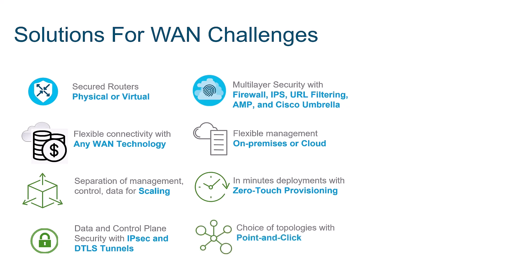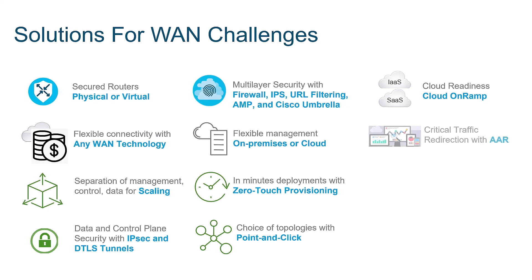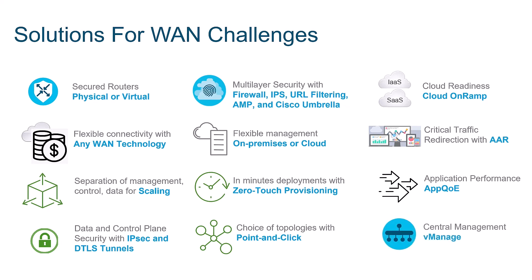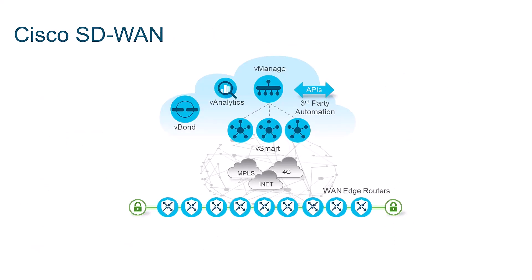Any kind of topology is supported. You can get connected to the cloud at any moment using a feature called Cloud on-Ramp. There's also application-aware routing to traffic-steer the most important applications to the best-performing circuit, and application Quality of Service to treat your applications in the best possible way — all managed from a central controller called vManage.